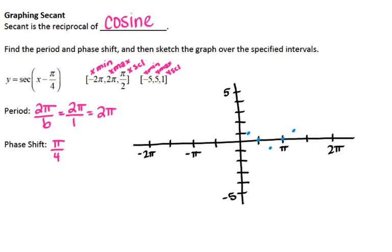I plotted my points wrong because I wasn't paying attention to my phase shift. Moving over π/4 units, the first dot is at π/4, then it hits 0, goes down to negative 1, back at 0, and then back at positive 1. I forgot to take into account the phase shift. I'm going to do the same thing in the opposite direction — in between my tick marks — because of the phase shift.